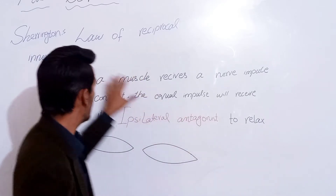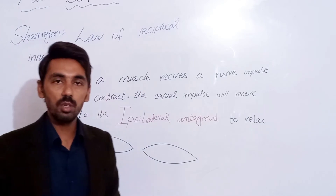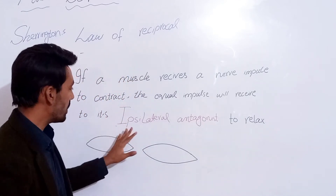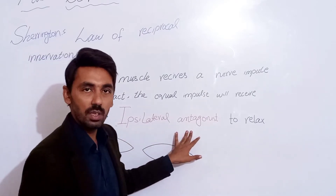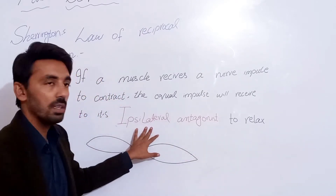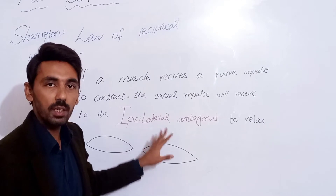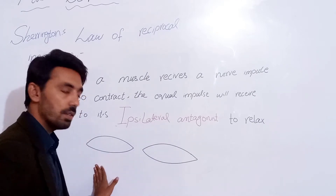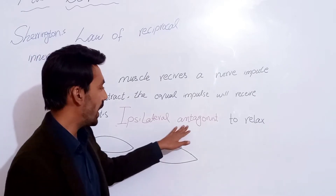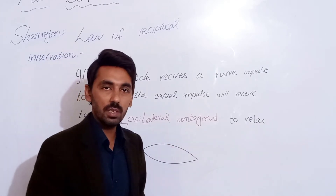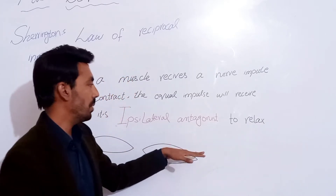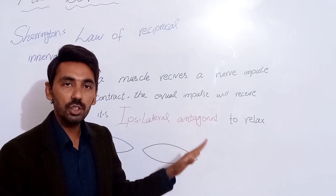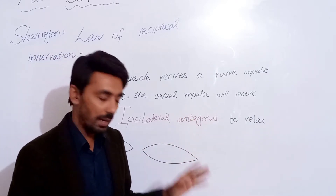This is Sherrington's law of reciprocal innervation. We discussed the ipsilateral antagonist in the last video — ipsilateral means the same eye, the concerned eye, either right or left. Antagonist muscles are those which move in the opposite direction of the agonist muscle.